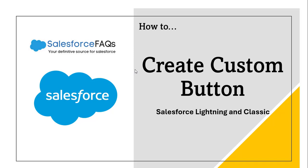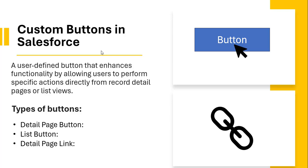Hello everyone and welcome to the channel. In this video we will see how we can create custom buttons and add them into the Salesforce Lightning and Salesforce Classic page layout. In Salesforce, a custom button is a user-defined button that enhances functionality by allowing users to perform specific actions directly from a record detail page or list views. There are three types of buttons in Salesforce: detail page button, list button, and detail page link.